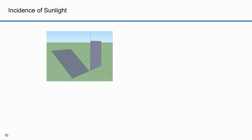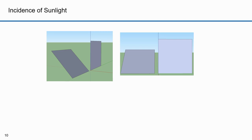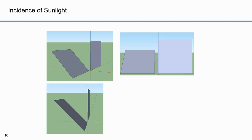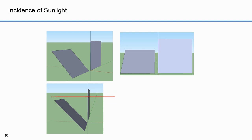Why does tilt matter? Take two rectangular plates and tilt one by 45 degrees. If you looked at them straight on, one looks shorter. Let's look at these plates sideways. The sun's rays hit the vertical plate straight on. For the tilted plate, some of the rays miss the plate. If this was sunlight, the vertical plate receives more solar energy and the tilted plate receives less.